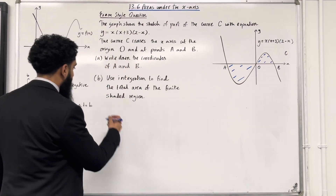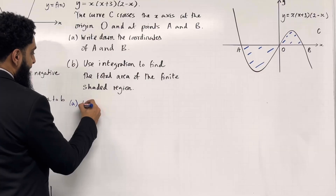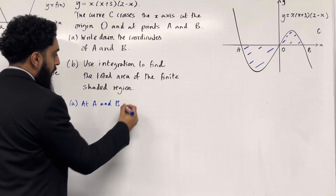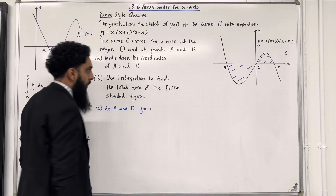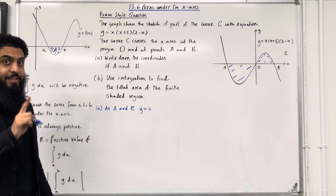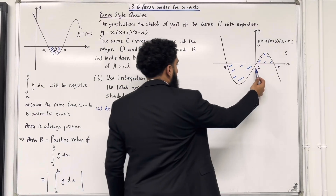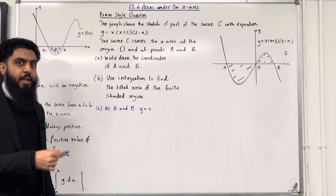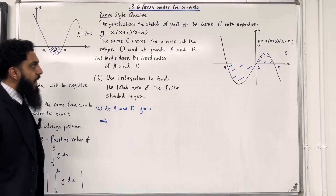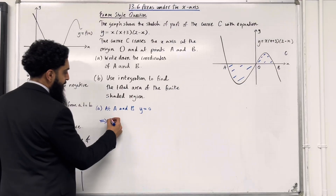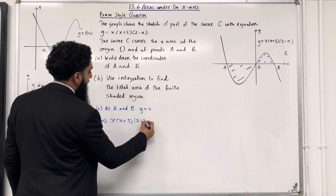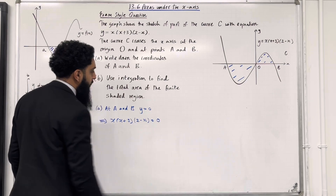Let's have a look at the solution to part a. We know that at A and B, y is equal to 0, because A and B are x-intercepts. We also have an x-intercept at the origin O. Let's work out the coordinates for A and B. This implies that we take the equation for y, which is x multiplied by (x plus 3) multiplied by (2 minus x), and we set that equal to 0.